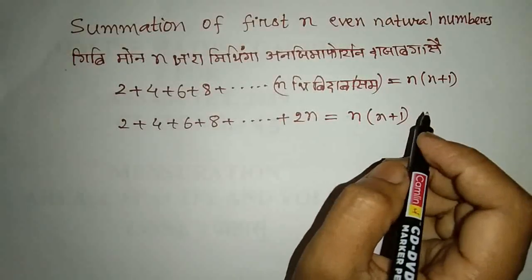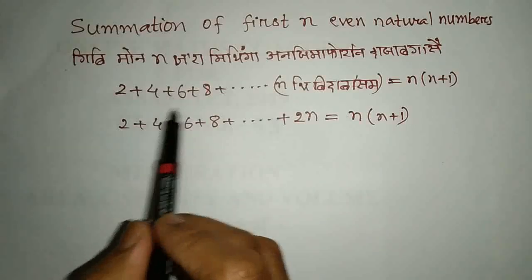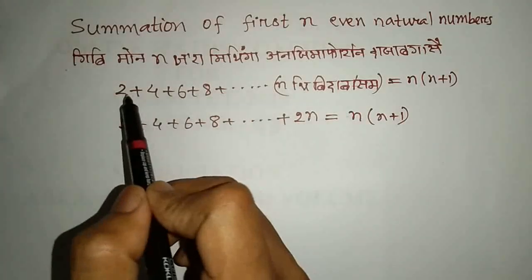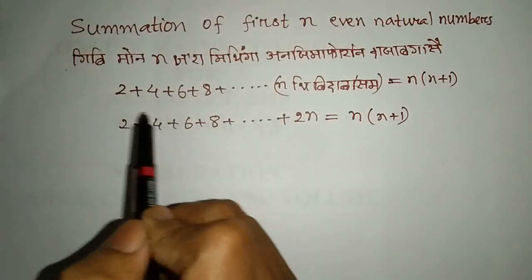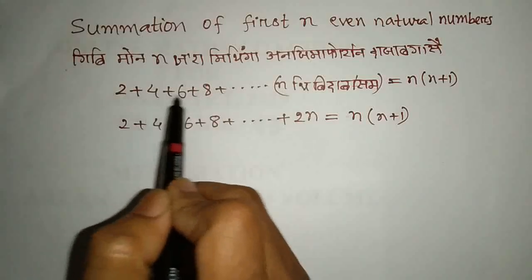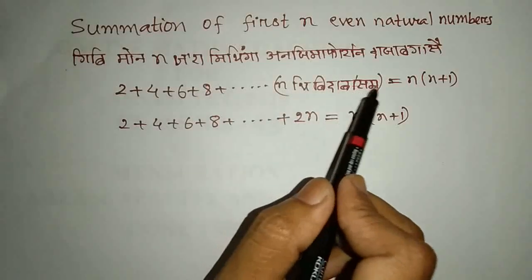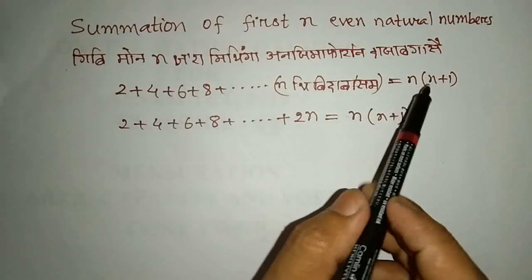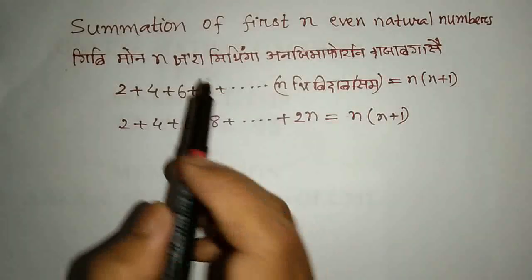So basically, the only value is n plus 1. So, this is the formula. If you want the formula, it is n into n plus 1.